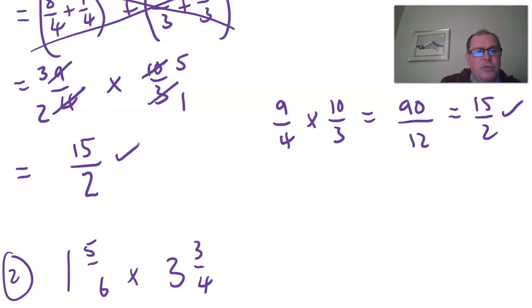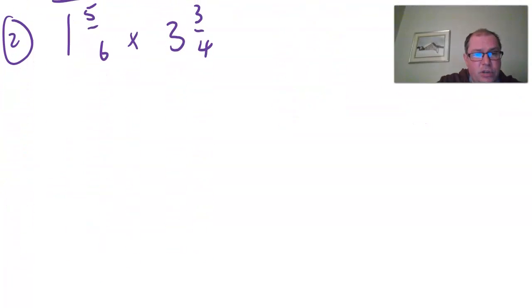We shouldn't leave our answer as fifteen over two. We should write it as a mixed number. So two goes into fifteen seven times remainder one. So seven and a half, which you know fifteen divided by two is seven and a half anyway. Okay that's it. That's how you do it. So why don't you try number two on your own. Pause the video and try it now.